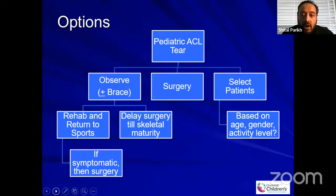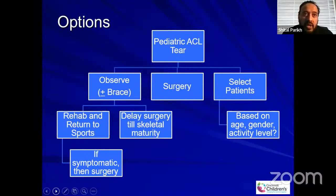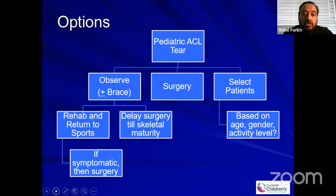When we look at the options, they are broadly categorized in three different sections. The first is observation. Even in advanced medical institutions with pediatric orthopedic and sports medicine surgeons, many adult sports surgeons would recommend observation. They don't want to get into growth arrest issues and think it's okay to wait until the child is mature — going to rehab, returning to sports if not symptomatic, or deliberately delaying surgery until skeletal maturity.